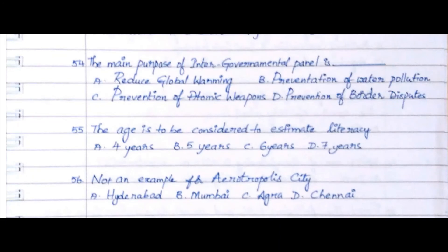Question 54: The main purpose of the Intergovernmental Panel is. Option A. Reduce global warming, Option B. Prevention of water pollution, Option C. Prevention of atomic weapons, Option D. Prevention of border disputes. The answer is Option A. Reduce global warming.